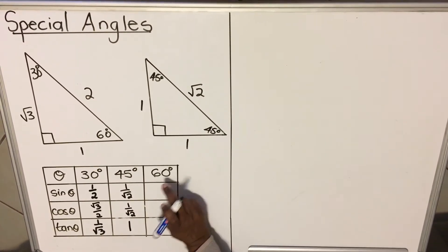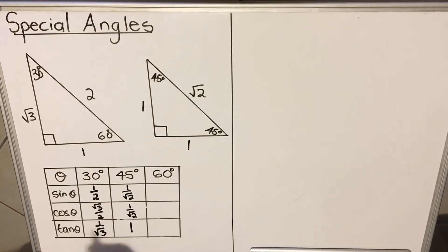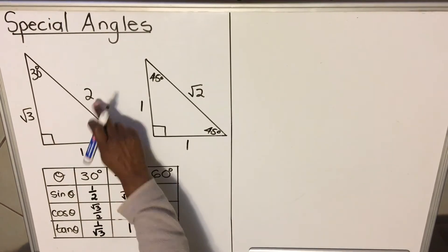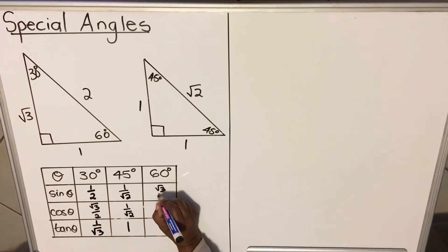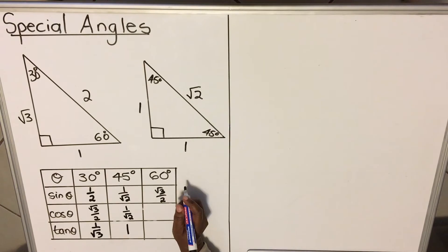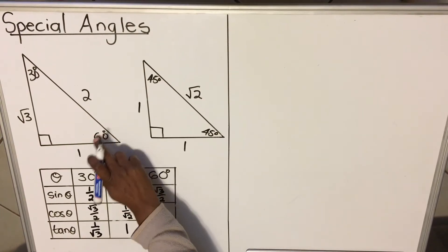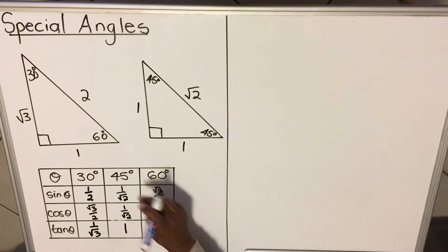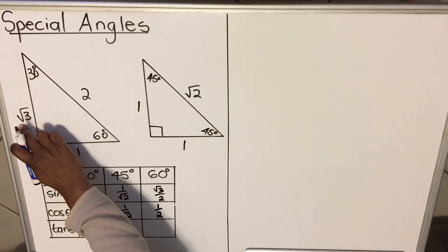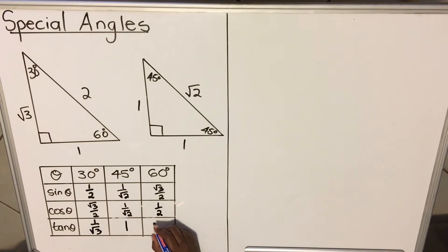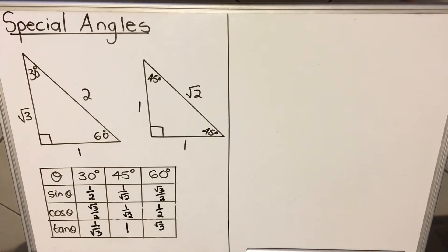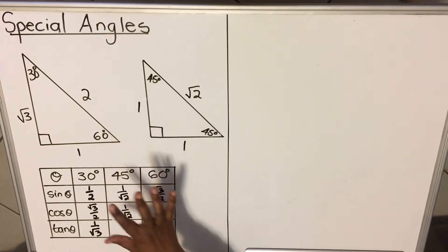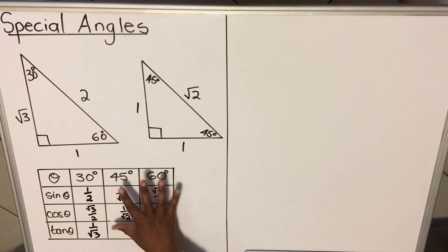Now we use 60; it's this triangle again. Sine 60 — here's my angle 60 — sine is opposite over hypotenuse, giving root 3 over 2. Cos 60 — cos is adjacent over hypotenuse — gives 1 over 2. And tan 60 — tan is opposite over adjacent — is root 3 over 1, which is the same as root 3. This is how you use the triangles to fill the table.